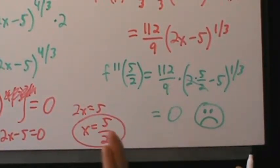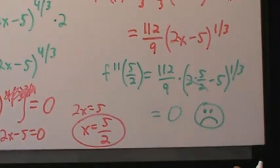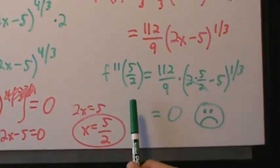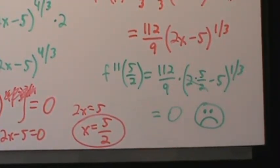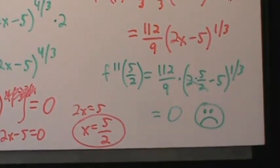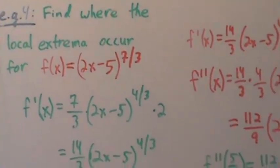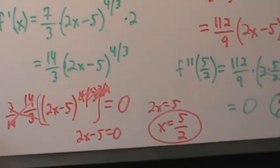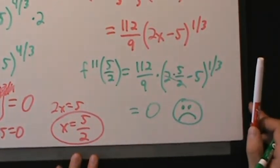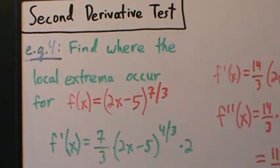We could have a min, a max, or neither at x = 5/2. If you remember from the first derivative test video, what we ended up with was that this is neither a min nor a max. You can figure that out using the first derivative test. But the second derivative test tells us nothing here. So that's Example 4 — a slightly more complicated example showing that the second derivative test might fail and be inconclusive, and you just have to try something else.